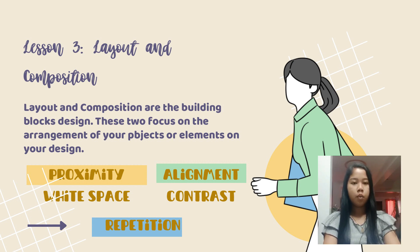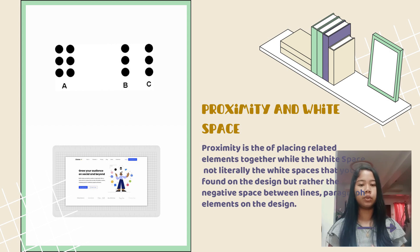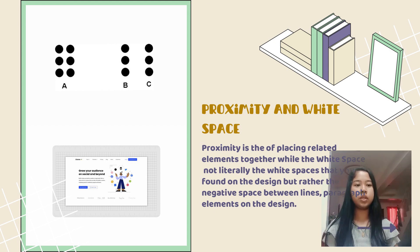There are five basic principles of layout and composition: proximity, white space, alignment, contrast, and repetition. Proximity is the process of placing related elements together. Elements that are not related should be separated to show that they are not connected to each other.